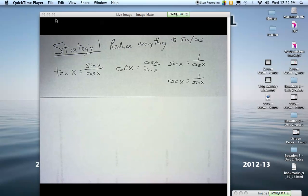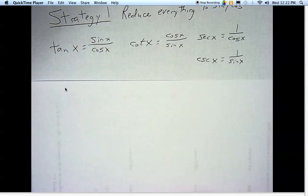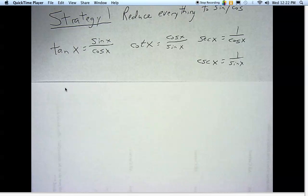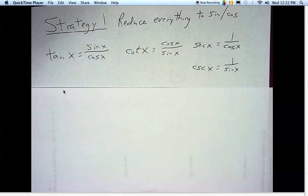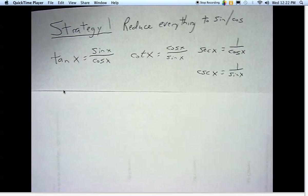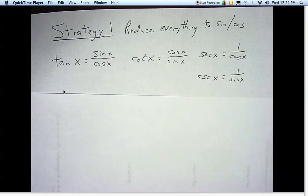All right, so this time we're going to talk about some strategies for working with trig identities. Strategy number one is to take things that are not sine and cosine and rewrite them using sine and cosine.